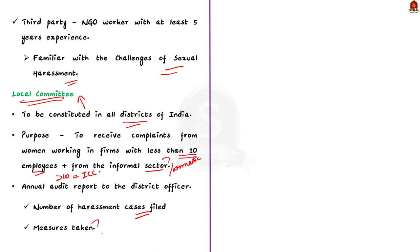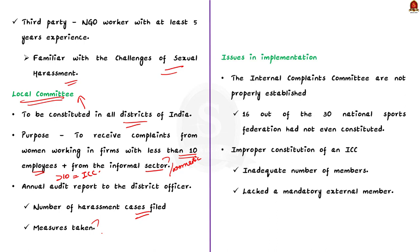At the end of every year, the employer has to file an annual audit report to the district officer about the number of harassment cases filed and the measures taken. The Supreme Court recently observed that Internal Compliance Committees are not properly established in many workplaces as per the POSH Act 2013. A newspaper report cited by the Supreme Court stated that 16 out of 30 National Sports Federations had not even constituted an Internal Compliance Committee.